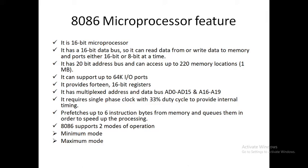8086 microprocessor is a 16-bit microprocessor, whereas earlier we studied that 8085 is an 8-bit microprocessor. It has a 16-bit data bus, so it can read data from or write data to memory and ports either 16-bit or 8-bit at a time. It has a 20-bit address bus and can access up to 2^20 memory locations.